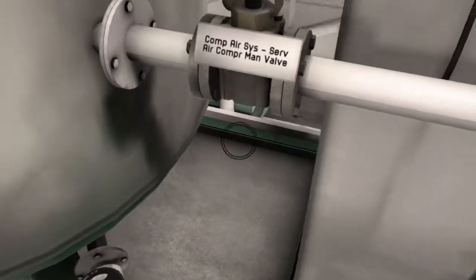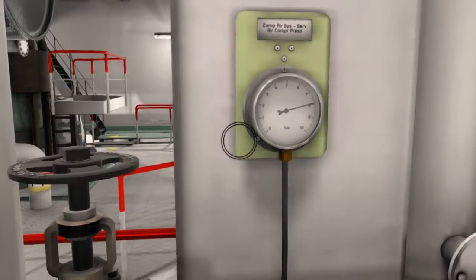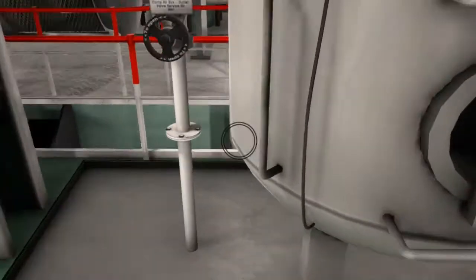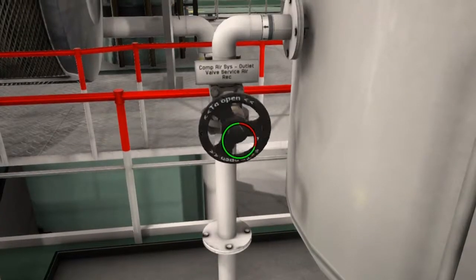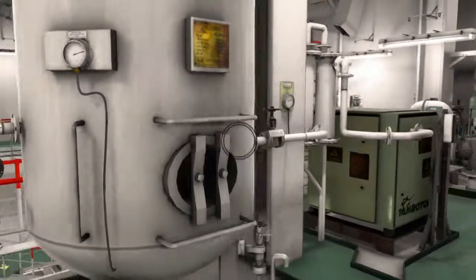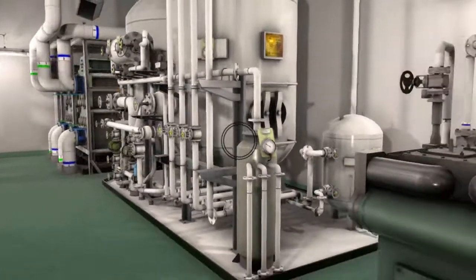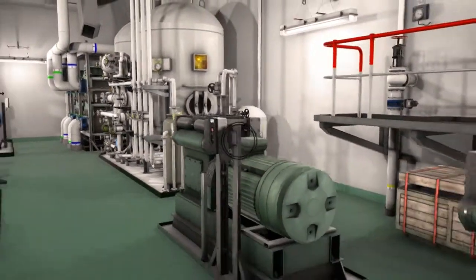Open the outlet valve of the receiver to give supply to the consumers such as the hydrophore tanks, water mist, incinerators, and other machinery requiring service air. We have now completely checked the compressed air system. Always remember to drain the air bottles and check required norms of pressure and temperatures.